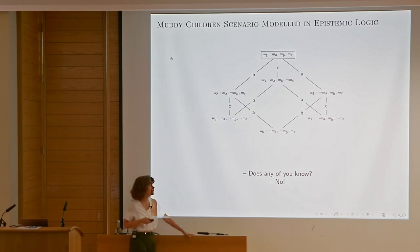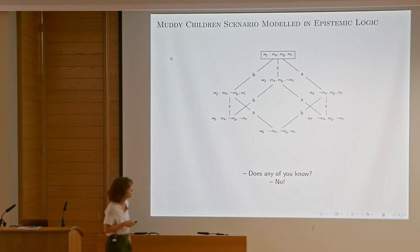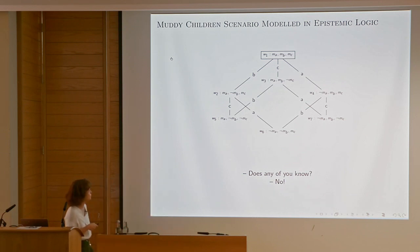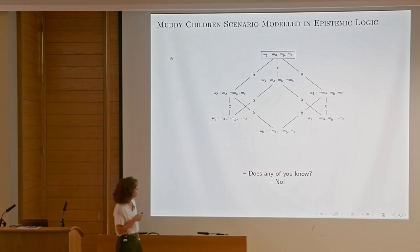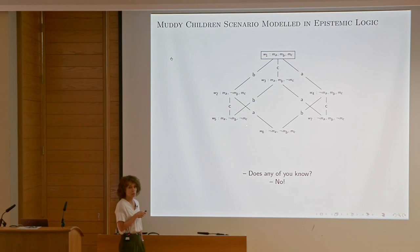Now the father asks 'does any of you know if you're muddy or not?' and they say no. We can infer that all states with no outgoing edge for one child are eliminated. Intuitively, in the world where only A is muddy and the two others are not, if I'm the muddy kid and I see two non-muddy kids, I know that I am the muddy one. On the modeling level, there is simply no outgoing edge for agent A.